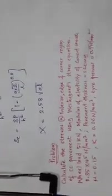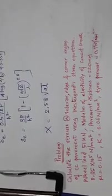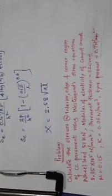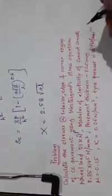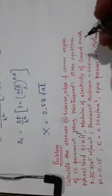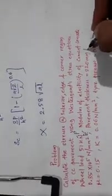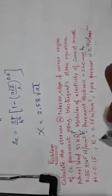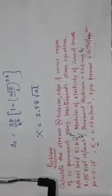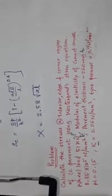Let us see one problem on this. Calculate the stresses at interior, edge and corner regions of CC pavement using Westcott stress equations where wheel load is given as 51 kN, that is P. Modulus of elasticity of cement concrete is 0.3 into 10 raised to 5 N per mm squared, that is E. Pavement thickness is given as h. Mu is Poisson's ratio of the concrete. K is the modulus of subgrade reaction. The tire pressure is given. Here, the unknown is a.